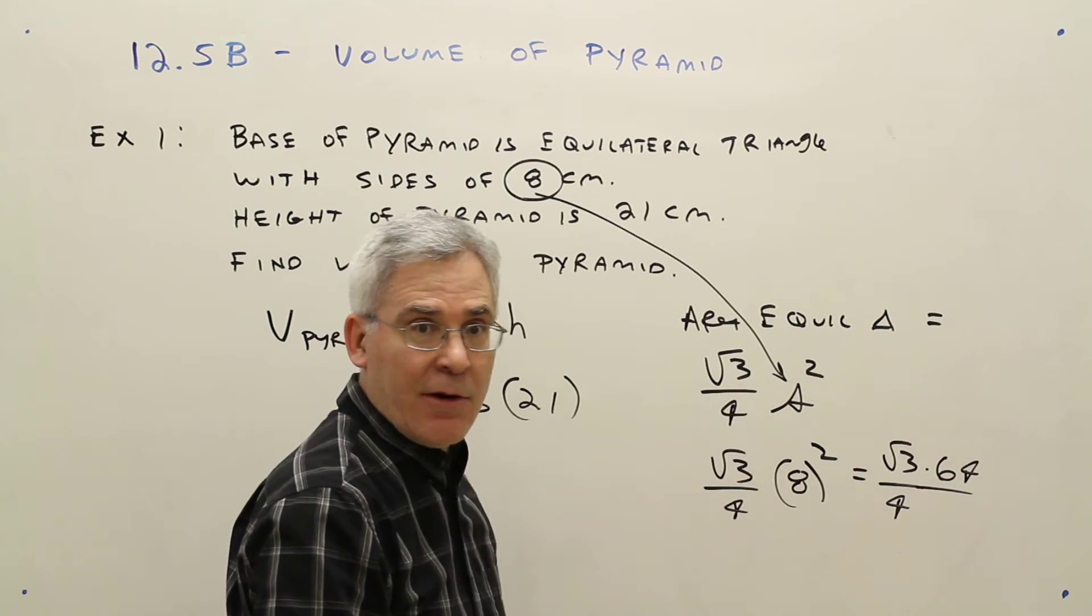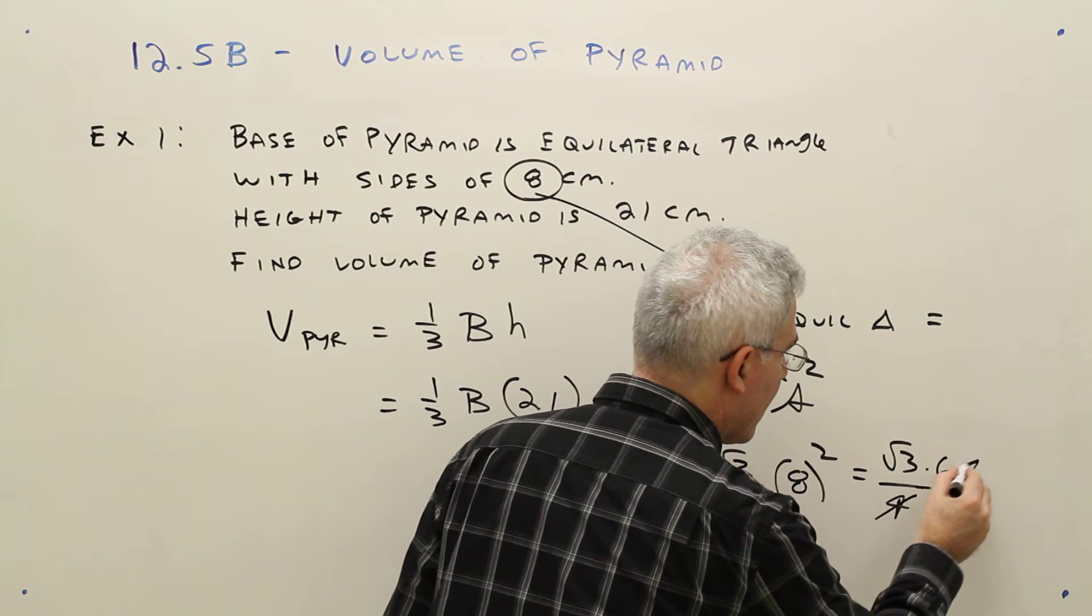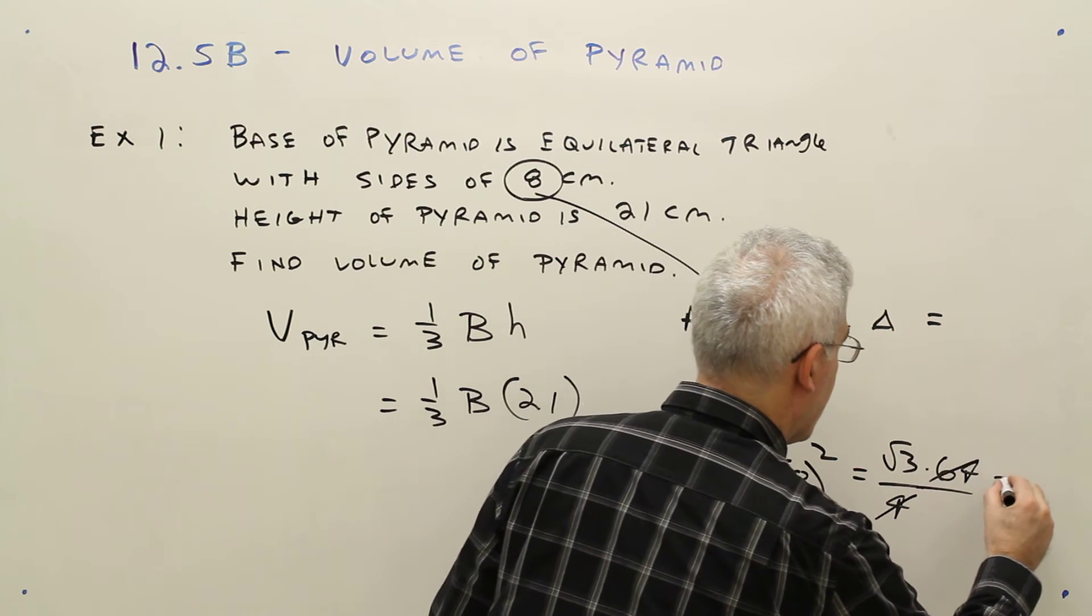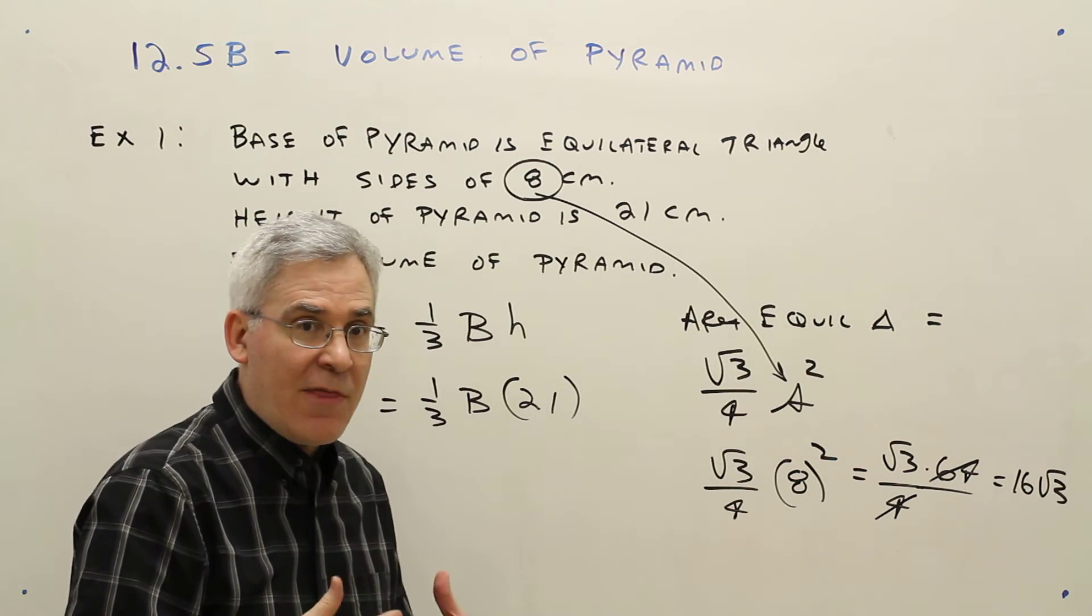Let me just find out how many times 4 goes into 64. Well, that's going to be 16 times. So that's going to be 16 times the square root of 3. And that's the base area.